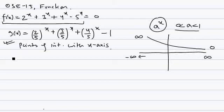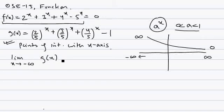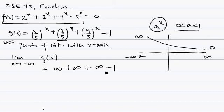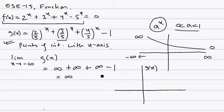Now let's take the limit of g(x) as x approaches -∞. Each component like (2/5)^x, (3/5)^x, and (4/5)^x approaches infinity as x → -∞. So the sum of those terms approaches infinity, and infinity minus 1 is still infinity. Therefore, g(x) approaches +∞ as x → -∞.